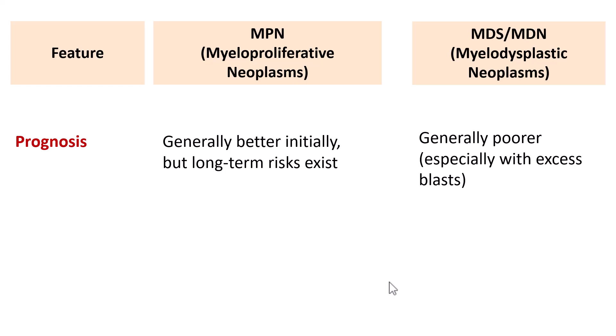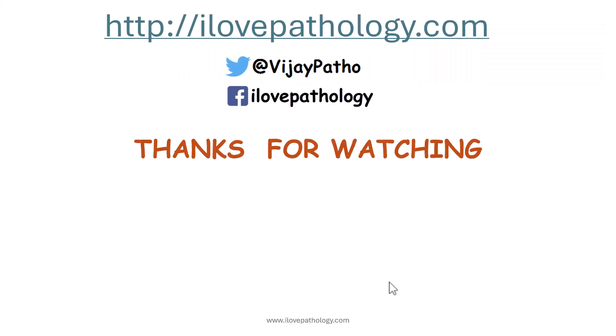That covers all the differences between Myeloproliferative Neoplasms and Myelodysplastic Neoplasms. To summarize: MPN is proliferative with mature cells, while MDS is dysplastic with ineffective erythropoiesis. These are the basic differences between myeloproliferative neoplasm and myelodysplastic neoplasm.